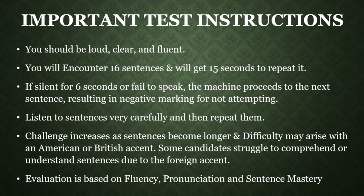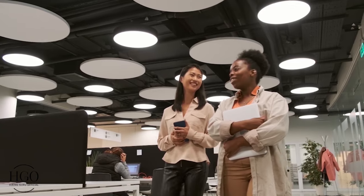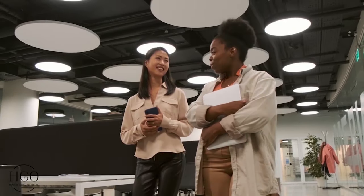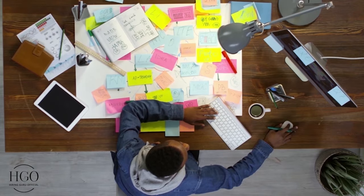The first two or three sentences will be very easy, which you can easily understand and repeat without any problems. However, as you move on, these sentences will become longer and more challenging, which you might have issues memorizing or understanding — especially with an American or British accent. All candidates are not able to understand the accent; they cannot comprehend the sentences at all due to the foreign accent. Just remember one thing: don't skip any sentence and not attempt it. You must say something to avoid the negative marking. It's essential to always respond even if you do not fully understand the sentence.